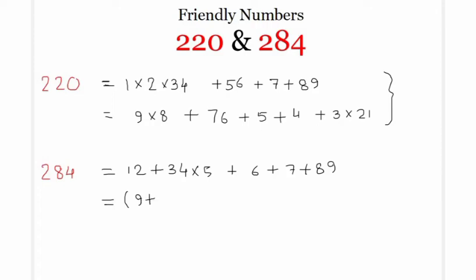It is like 9 plus 8 times 7 plus 6 plus 5 times 4 times 3 plus 2 plus 1. The first representation is in the increasing order of the digits. The second one is in the decreasing order of the digits.